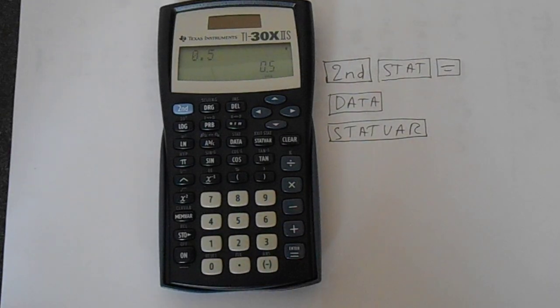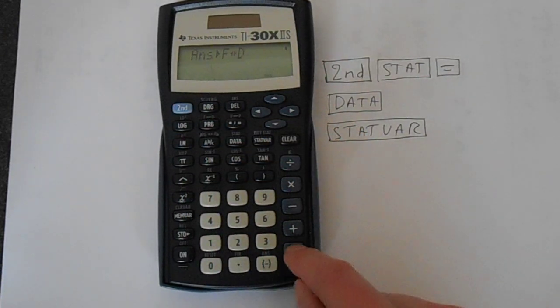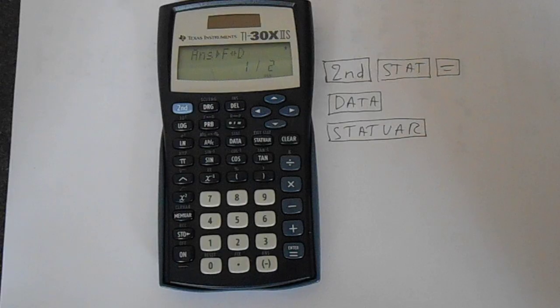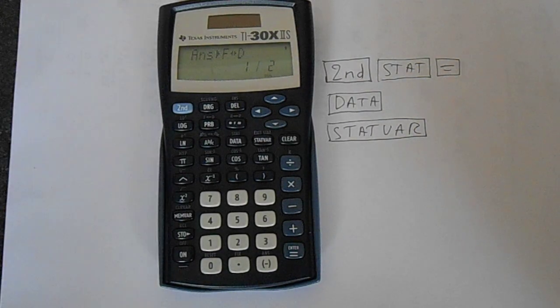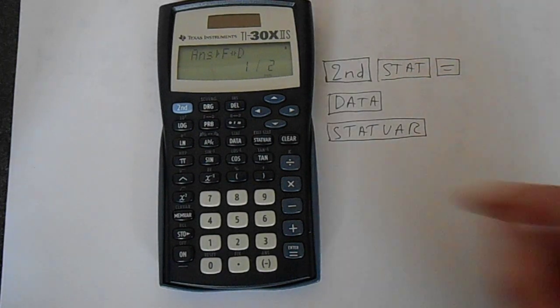So if you put in a half, enter, and then do that, it will give you that as a half. 0.5 to a half, or a half to 0.5, whatever mode you like.